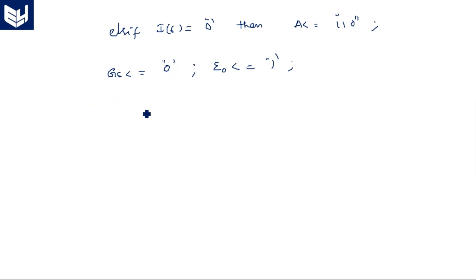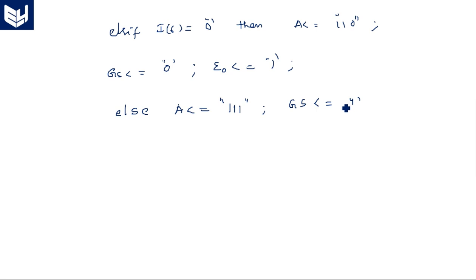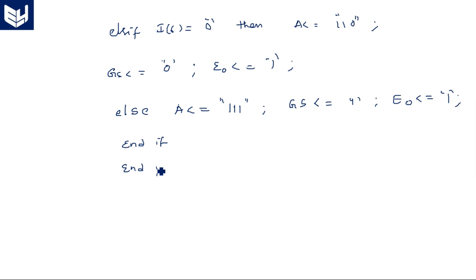The last condition is for I(7) = '0', so we write 'else' because it is the last one. Else: A is assigned with all 1s — "111", group_select is equal to '1', and E0 is equal to '1'. End if. End process. End p_be.